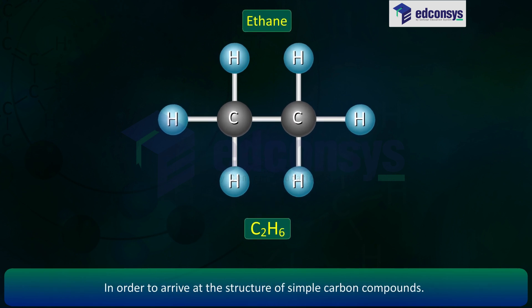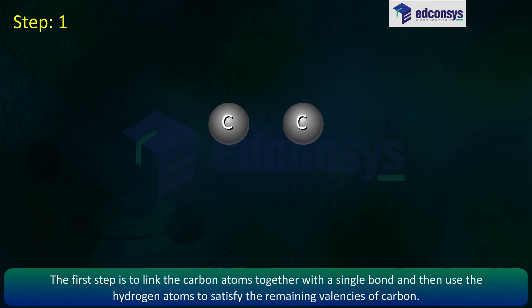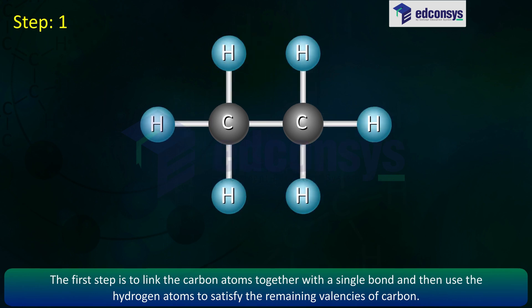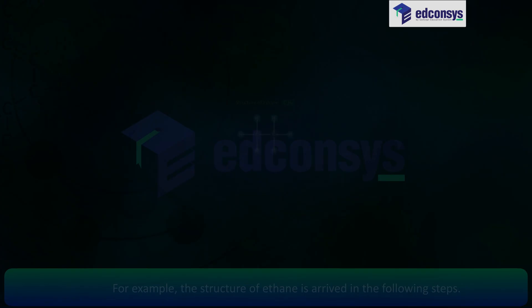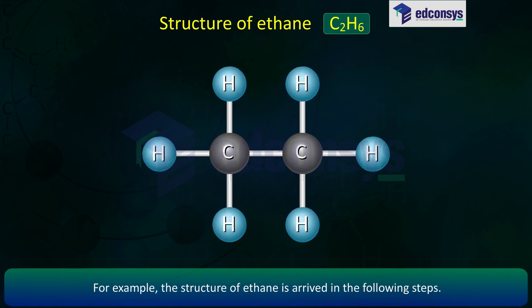In order to arrive at the structure of simple carbon compounds, the first step is to link the carbon atoms together with a single bond and then use the hydrogen atoms to satisfy the remaining valencies of carbon. For example, the structure of ethane is arrived in the following steps.